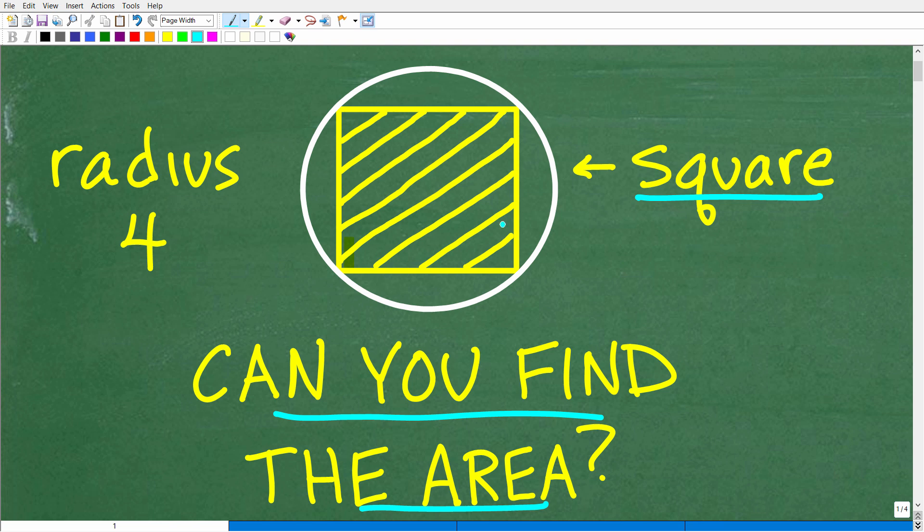We call this situation being inscribed. So the square is inscribed inside of the circle. In other words, the corners of the square are touching the actual circle. The only information we have is that the radius of the circle is 4. So that is the question.